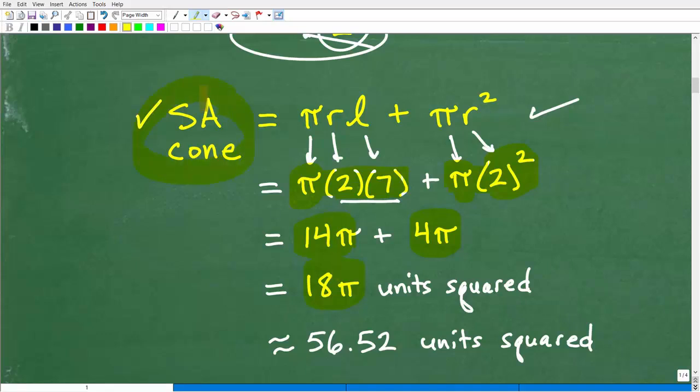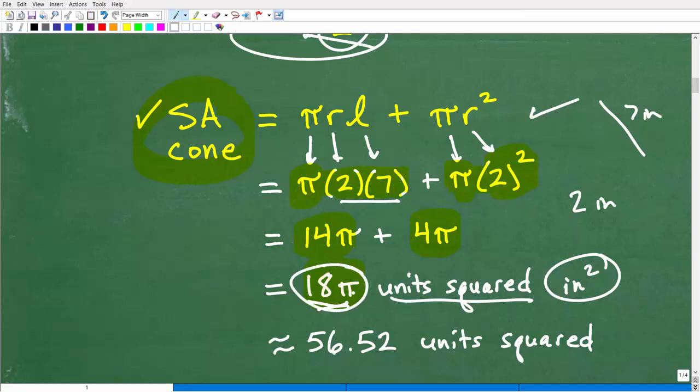So the surface area of this particular cone is exactly, now this is one of the details I want to stress to you, exactly 18 pi units squared. So, for example, if our radius was like 2 inches and our length along the side of the cone was 7 inches, this would be inches squared. So it's critical that you put in your units of measure. And if you're given units of measure, do not forget to do that. But you need to understand one thing: